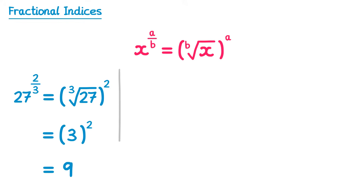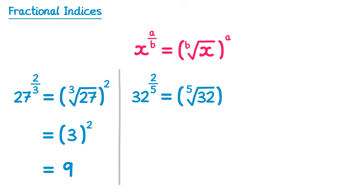Let's have a look at another one: 32 to the power 2 fifths. On the bottom we have a 5, so we start by doing the fifth root of 32. Once we've found that, we then square it, since we have a 2 on the top. The fifth root of 32 is 2 — we did that one earlier — so we've got 2 squared, which is 4.